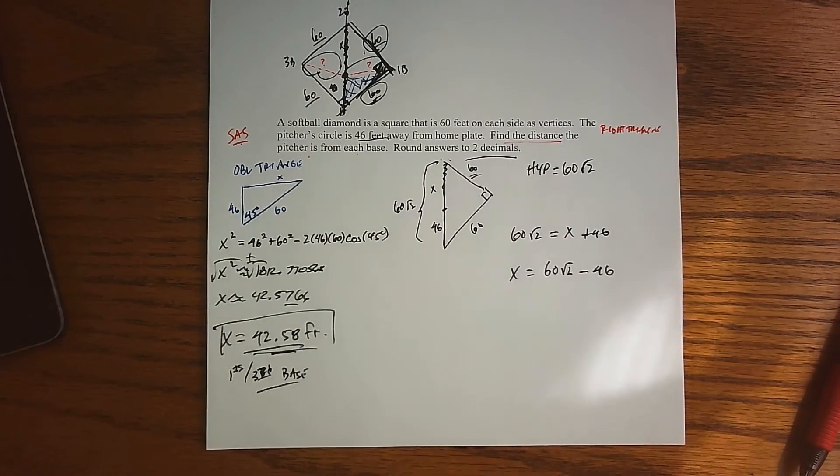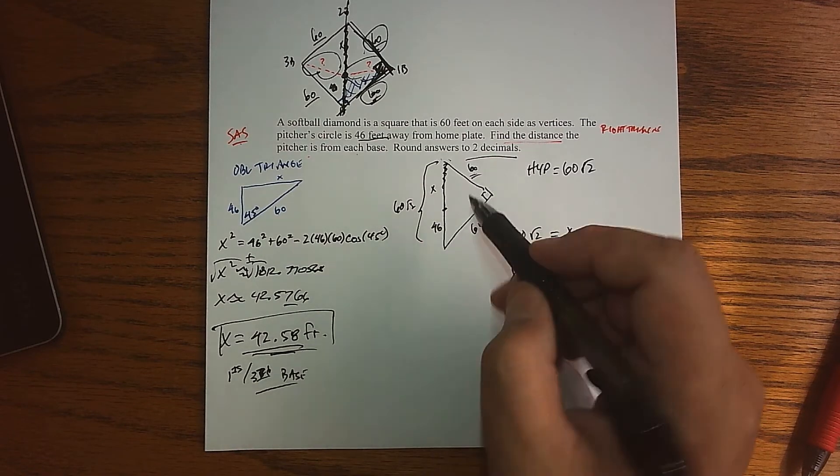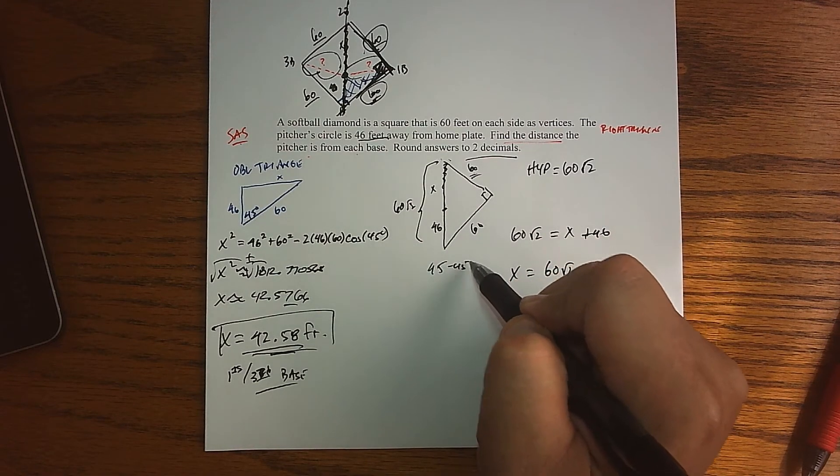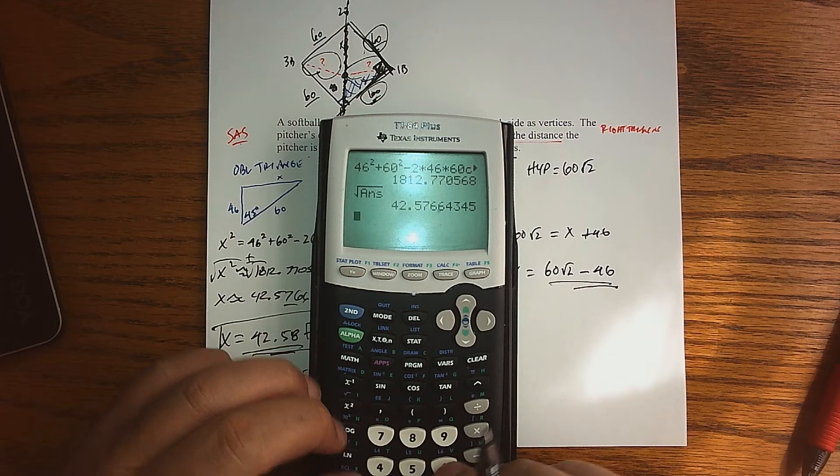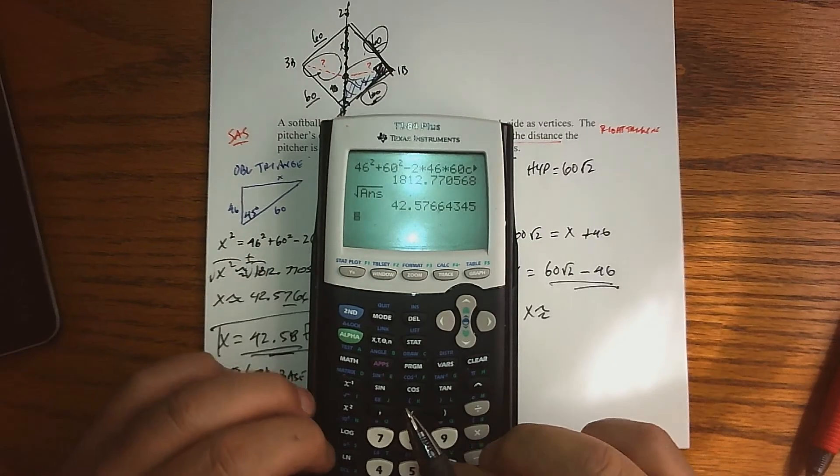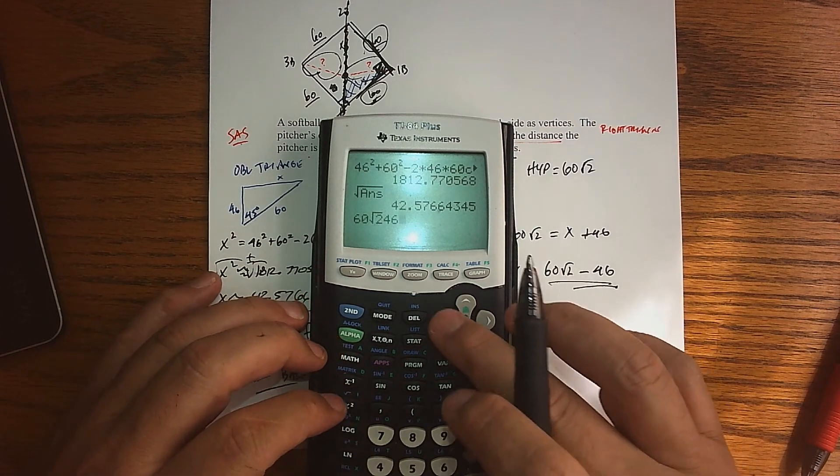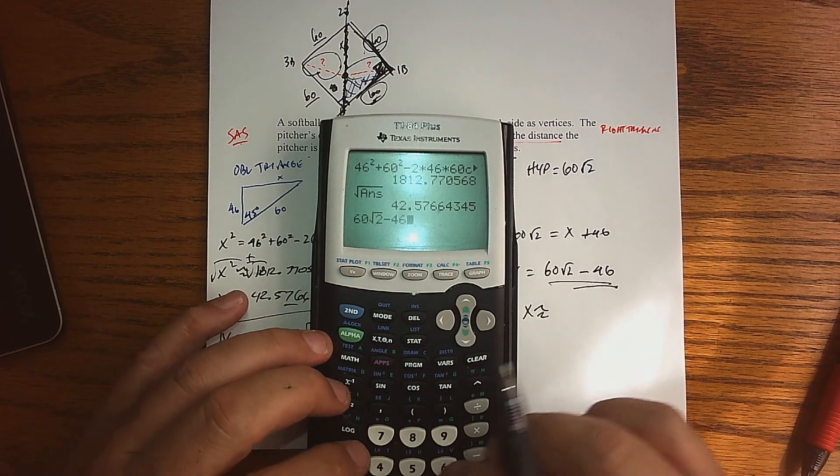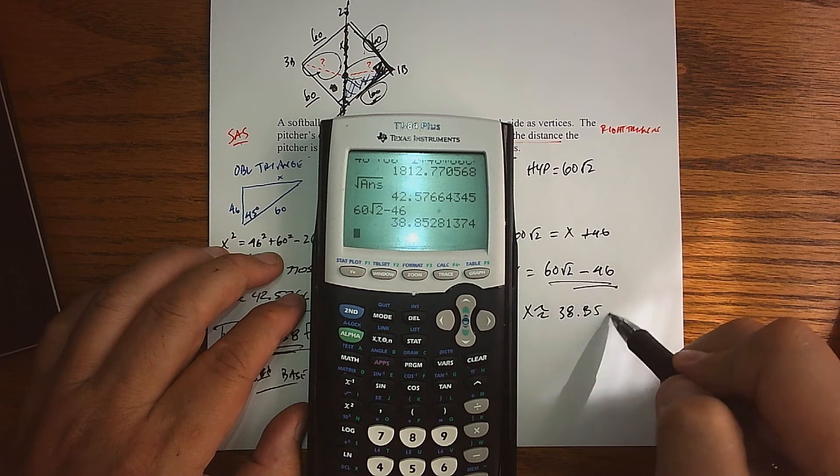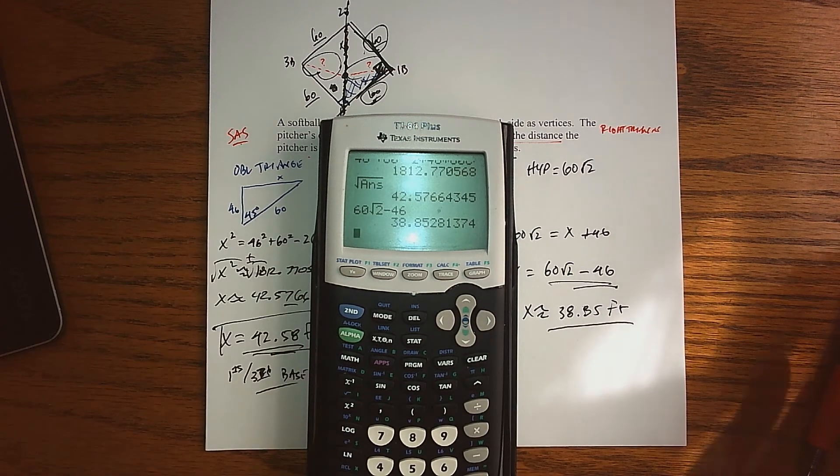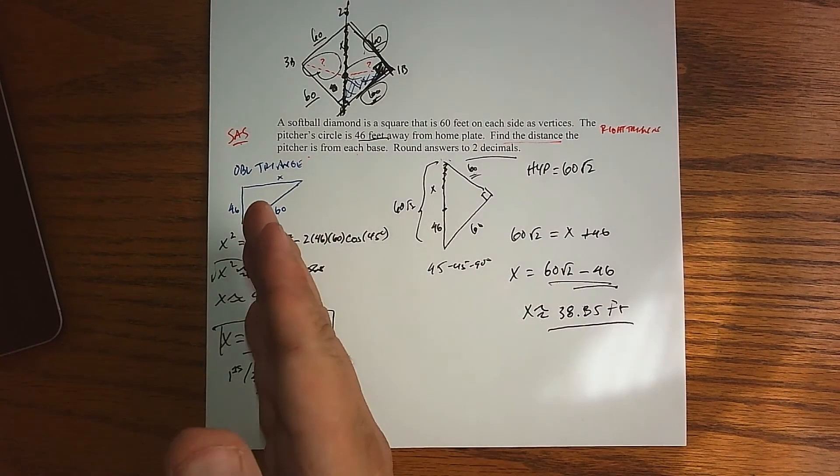So that one actually doesn't need a Law of Sines or Cosines. It's just using some right triangle situations. It happens to be a special right triangle, 45-45-90 degree right triangle. So there's your exact answer. But in terms of a decimal, x is roughly 60√2 minus 46, and that would be my estimate, so 38.85 feet.